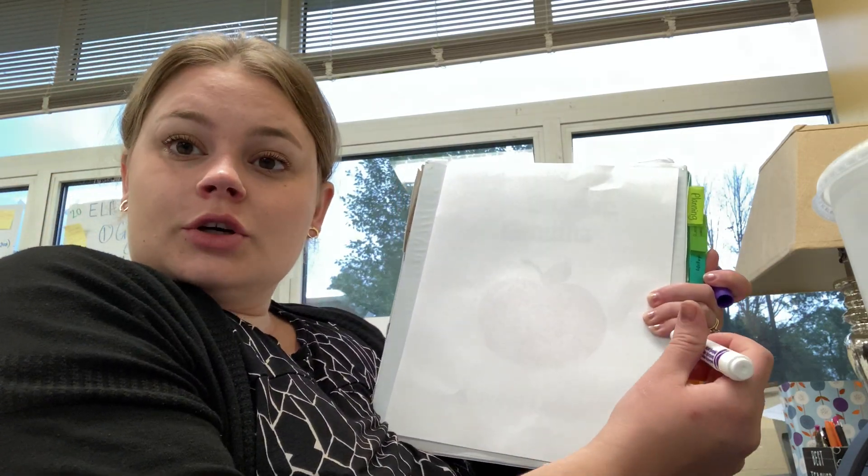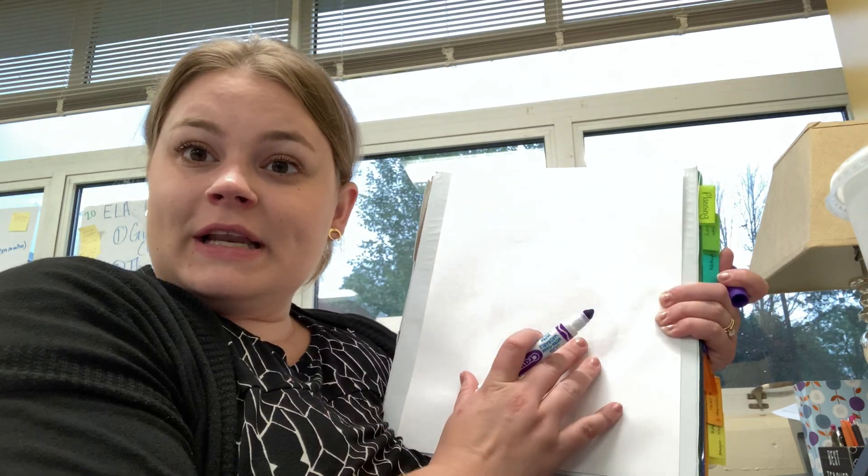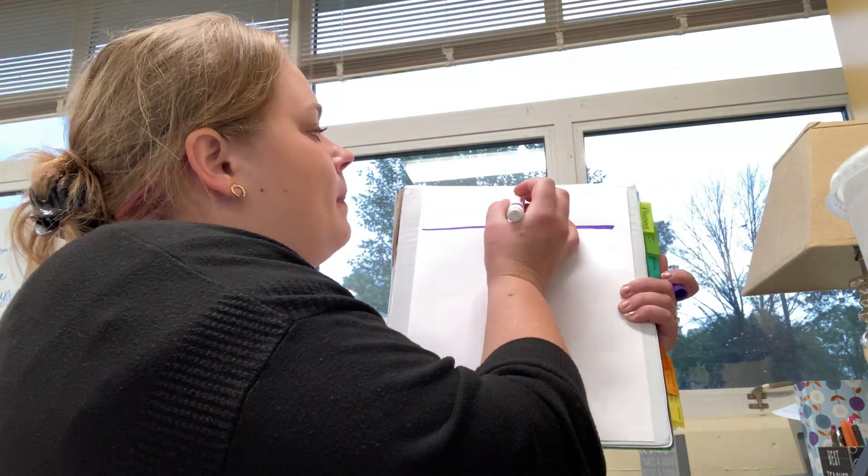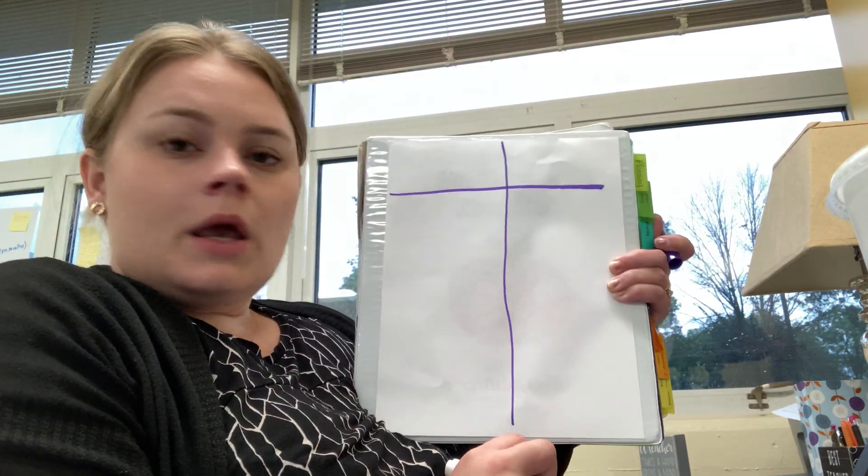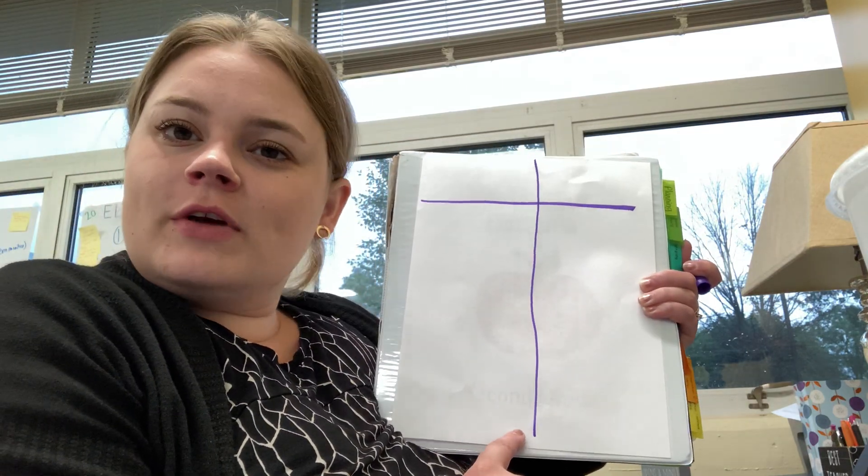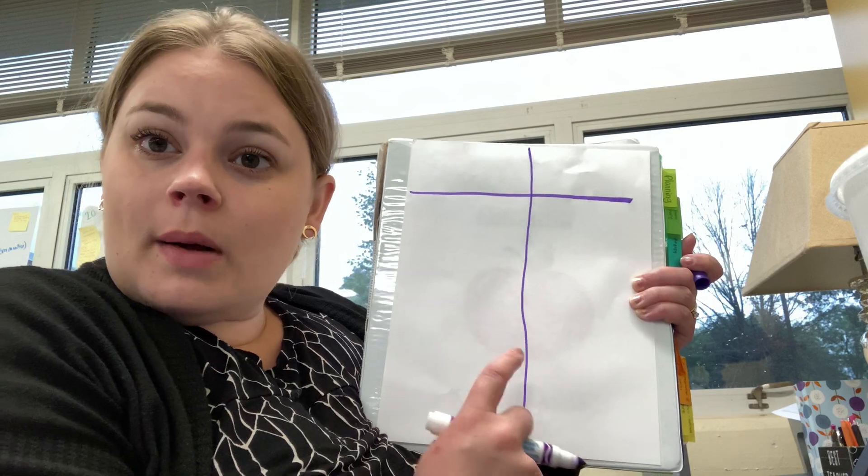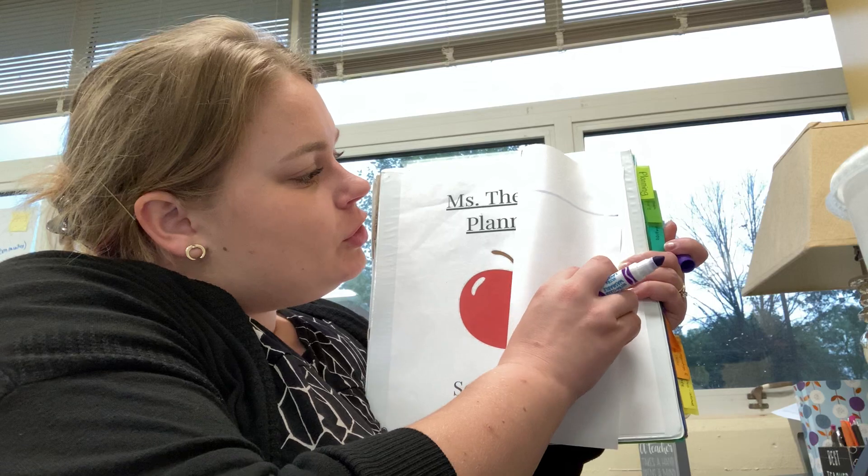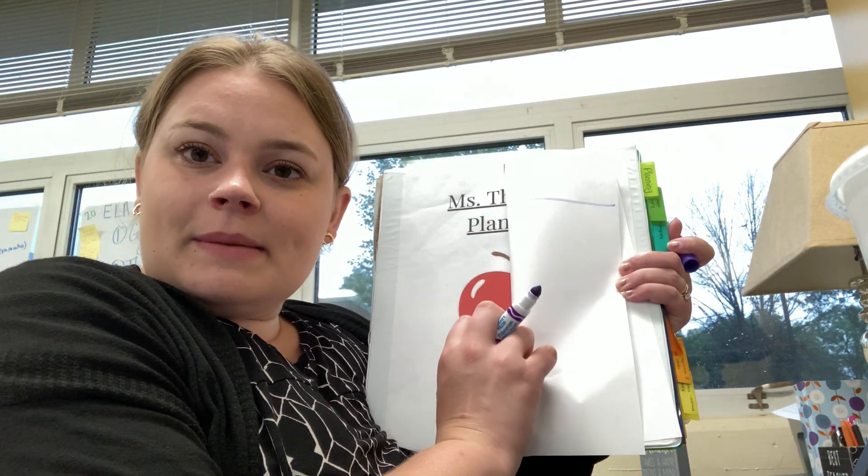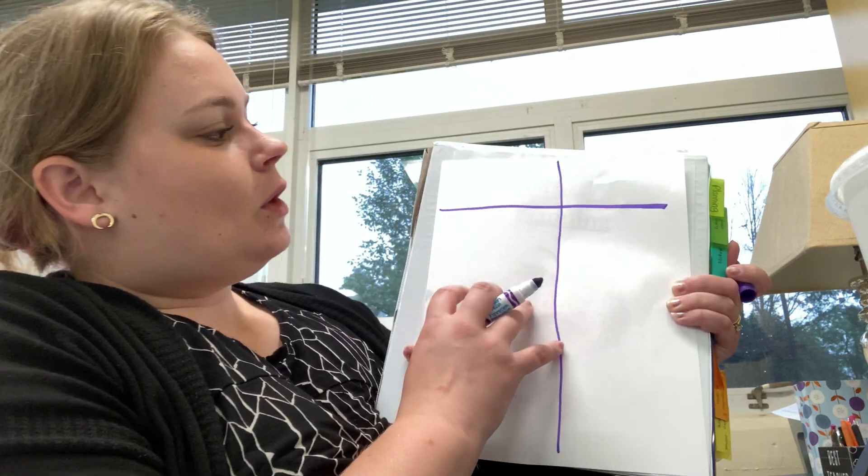So, then what you're going to do is you're going to make a lowercase T, but you're going to make it really big to fill up the whole page. That's why it's called a T-chart. Notice how my line isn't perfectly straight. That's okay. But, there's about the same amount of room on both sides of the paper. If you have trouble doing that, you can fold your paper and press it down so that it makes a crease, and then you can just draw your line on the crease.